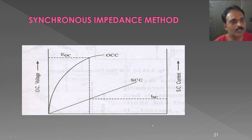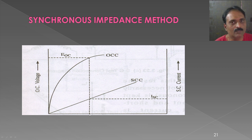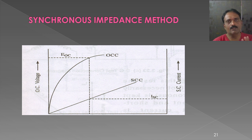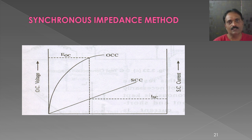The ratio of open circuit voltage to short circuit current for a given field current gives the synchronous impedance ZS: ZS = Eoc / Isc. Since we already know the armature resistance RA, we can find the synchronous reactance XS using the formula: XS = √(ZS² − RS²).